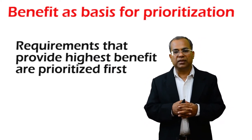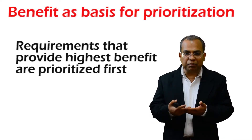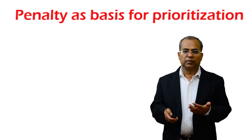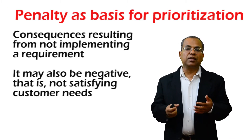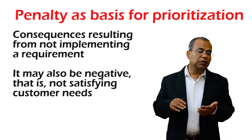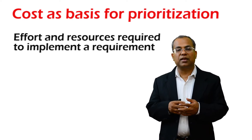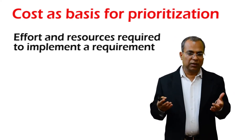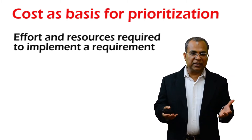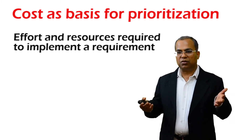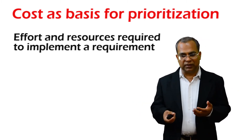The first basis is benefit — requirements with higher benefit are given higher priority. Then penalty: there could be requirements that, unless you implement them, you will be penalized, so you must satisfy them in higher order. Then cost: requirements which require a lot of cost to implement may be pushed to the back of the backlog, because you don't want to implement high-cost requirements and miss out on many low-cost requirements.